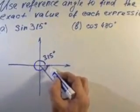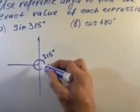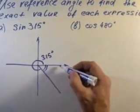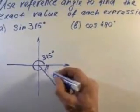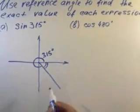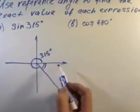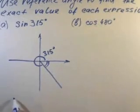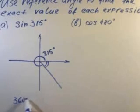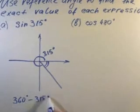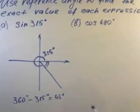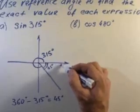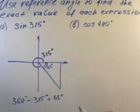Now this reference angle is the angle that formed between the terminal side of the angle and the x-axis. So this angle will be equal to basically how much we are short to the full revolution. 360 minus 315 is 45 degrees, and we're going to draw this little triangle here.